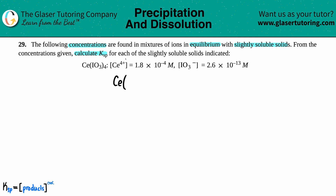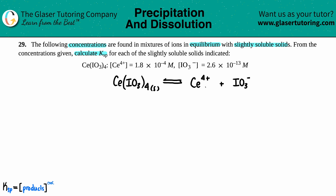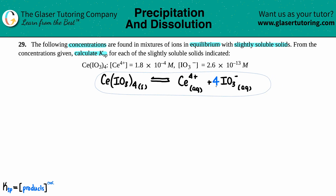So CeIo3-4 — that's the solid — comes to equilibrium with its two ions that it breaks down into: Ce4+ and IO3-. I can see charges, so I know they're aqueous. Now we just have to balance. I see that I have four IO3s, so I put a 4 in front of the IO3, and now everything is balanced.